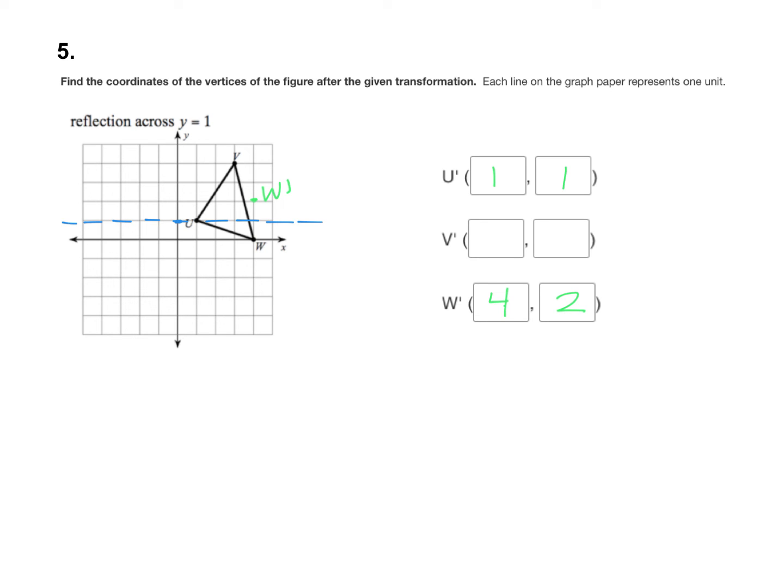And then I'll go back and look at V. You can see that V is 1, 2, 3 above my reflection line. So V prime just needs to be 3 below: 1, 2, 3, and we'll make a dot right there. And that is V prime. So V prime's coordinates would be at (3, -2).